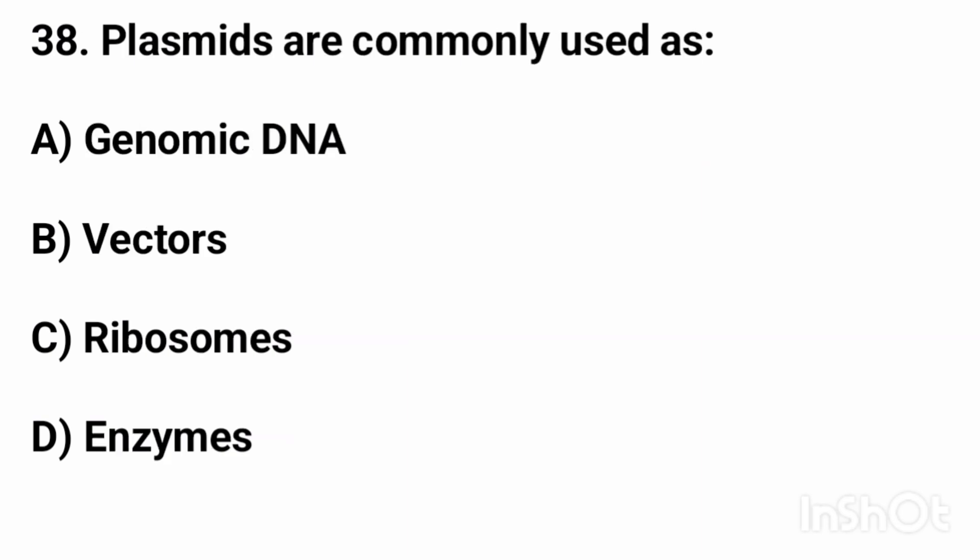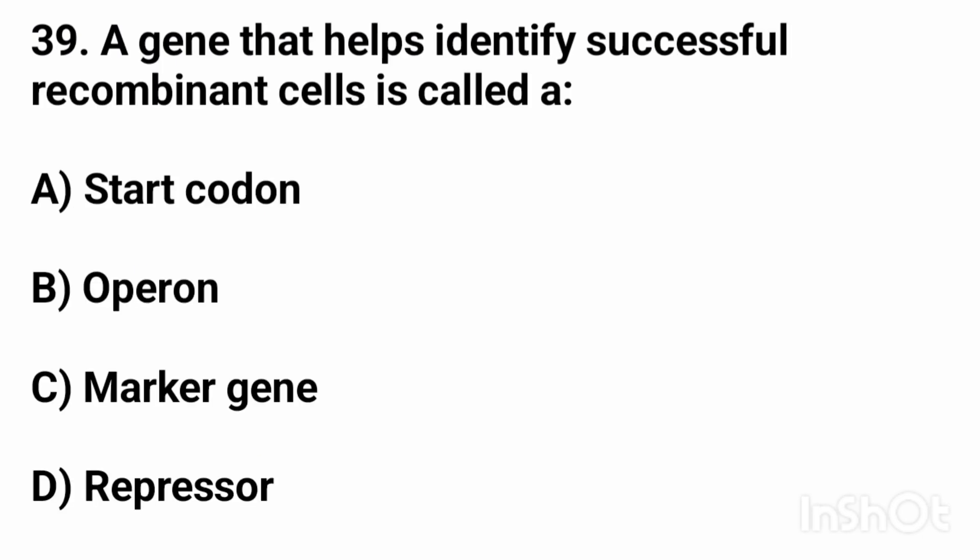Question thirty-eight: plasmids are commonly used as? The right answer is option B, vectors. Question thirty-nine: a gene that helps identify successful recombinant cells is called? The right answer is option C, a marker gene.